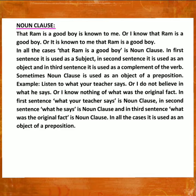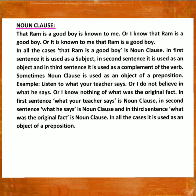Noun clause. Example: 'That Ram is a good boy is known to me', or 'I know that Ram is a good boy', or 'It is known to me that Ram is a good boy.' In all these cases, 'that Ram is a good boy' is the noun clause. In the first sentence it is used as a subject, in the second sentence as an object, and in the third sentence as a complement of the verb.